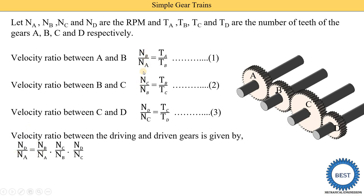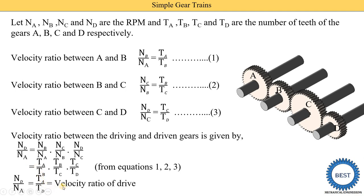To find Nd/Na, we multiply: Nd/Na = (Nb/Na) × (Nc/Nb) × (Nd/Nc). Substituting the tooth ratio equations, Tb cancels and Tc cancels, giving: Nd/Na = Ta/Td. This is the velocity ratio of a simple gear train. Using this equation, we can find the speed of gear D or gear A, or the number of teeth on any gear when solving numericals.